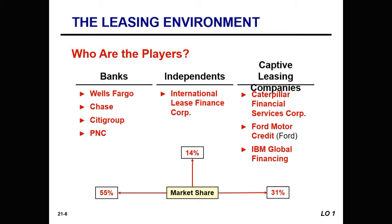So who are the lessors? 55% of them are going to be banks. About 14% of them are independents, and then 31% of them are captive leasing companies. These are places like Caterpillar Financial Corp, Ford Motor, IBM Global Financing — they're leasing their specific products, which is why they're called captive.